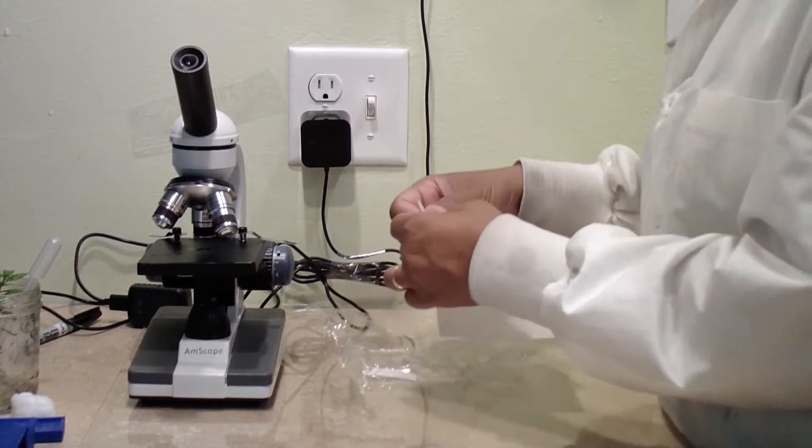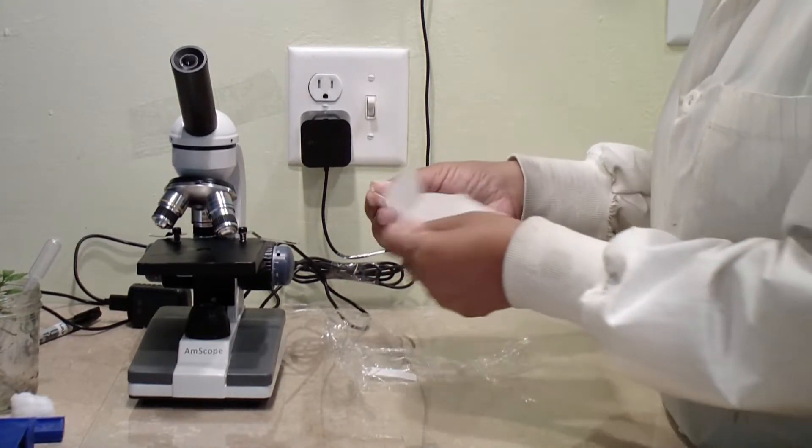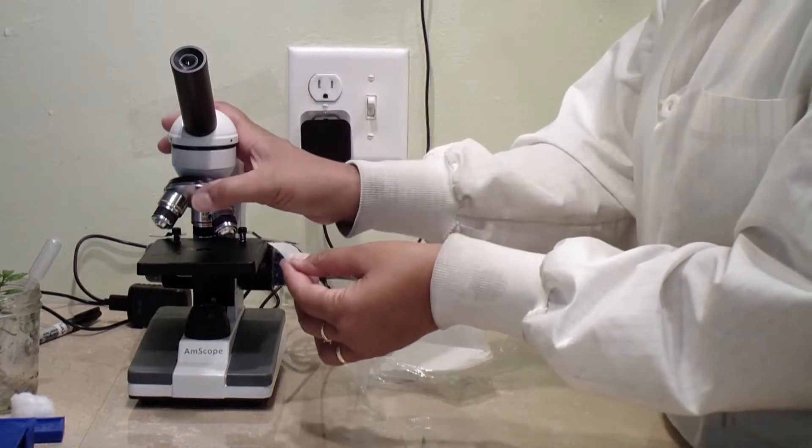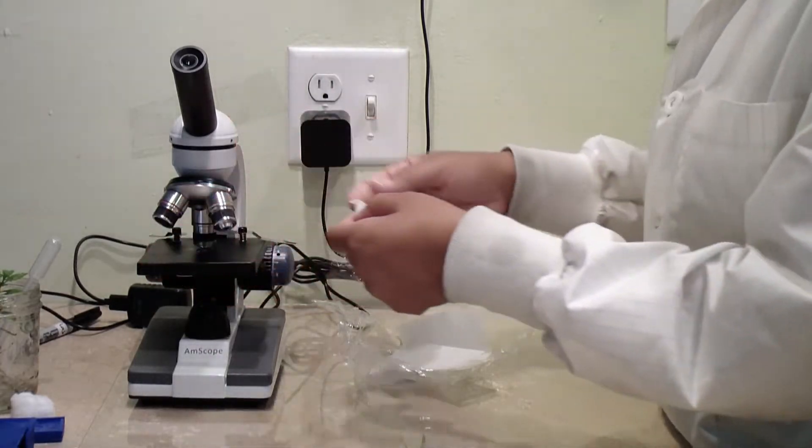When you're done using the microscope, tear a small piece of lens paper from your supplies and dab the lenses you just used clean. It is not necessary to rub the lens.